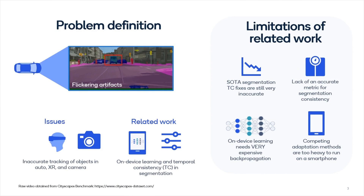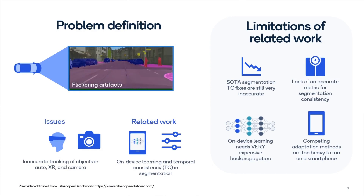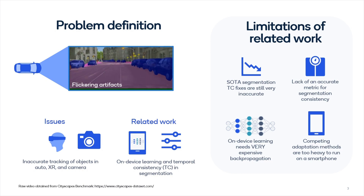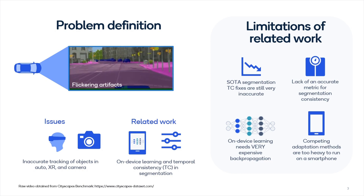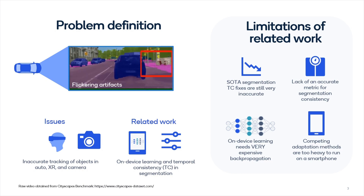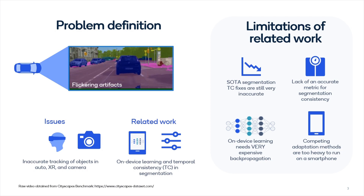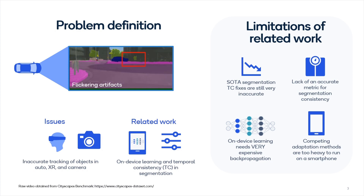However, existing segmentation solutions often have flickering artifacts and lack temporal consistency between video frames. Related work addressing these challenges still has limitations, including inaccurate temporal consistency between frames, the lack of an accurate metric to model consistency, and difficulty deploying real-time on smartphones.